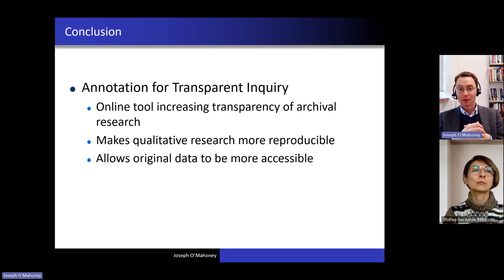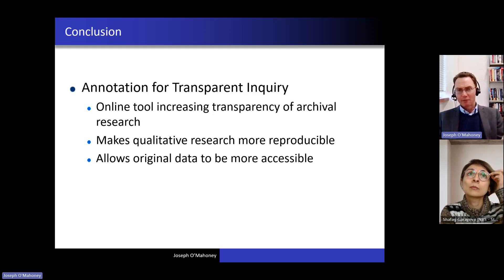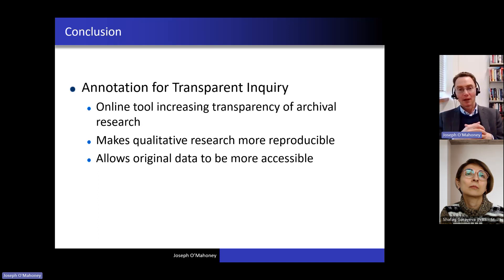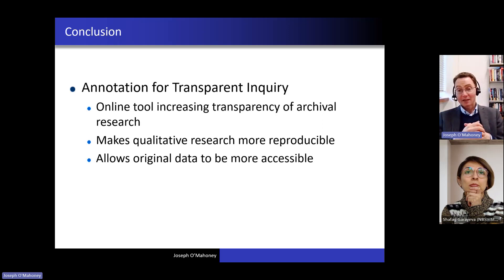I do think there's a lot of scope for coming up with some rules or conventions about how many documents should be provided, or whether you need to support certain types of claims, or how much access you need to provide, or how much extra analytic notes you need to add. Because I think there is a possibility for some sort of arms race, such that some journals might require way more, some journals might not, and then they might have all sorts of effects on who publishes where.